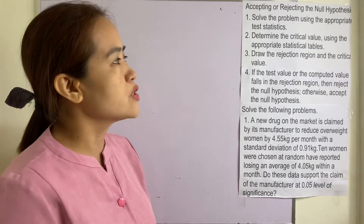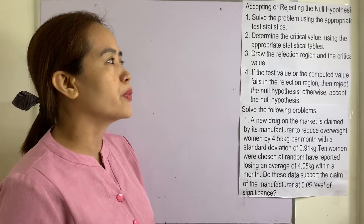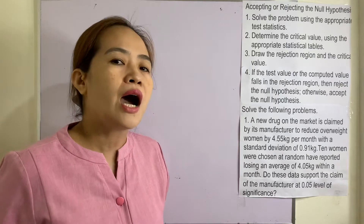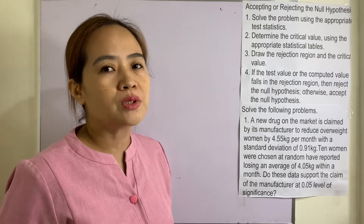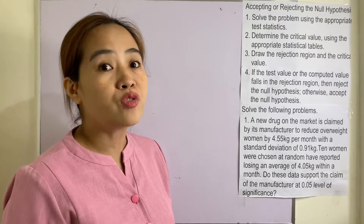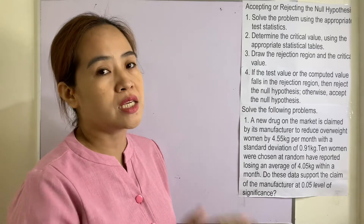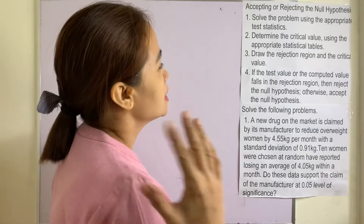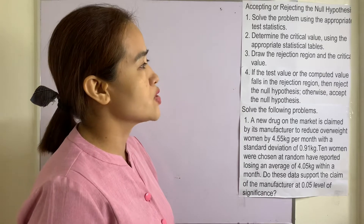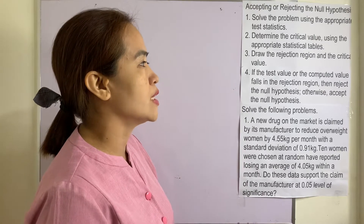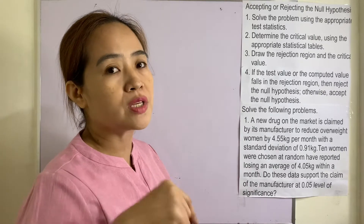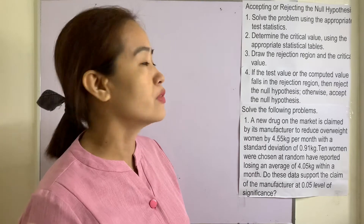Number two, determine the critical value using the appropriate statistical tables. You have the two-tailed and one-tailed test for the Z distribution and the T distribution. Number three, draw the rejection region and the critical value using the normal curve.